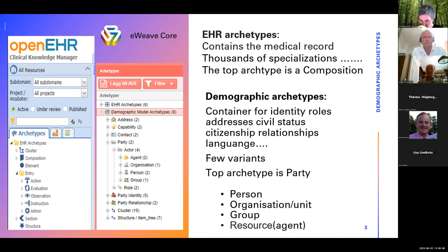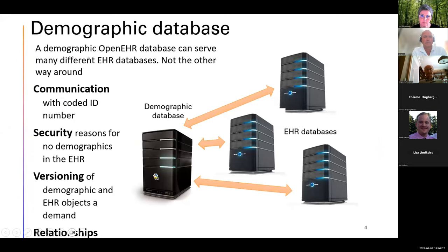The top archetype here is 'party' and not 'composition'. The four different types of demographic objects are person, organization, group, and resource. They're similar in their building but they are these four types. If you have a demographic openEHR database server, it can actually cover the needs of a nation, a region, or similar — it's very scalable. A demographic server can serve a lot of different EHR servers.